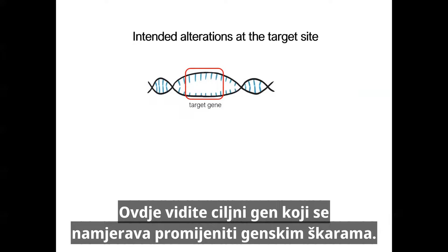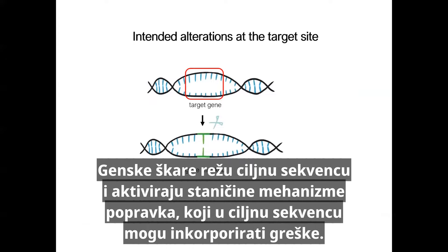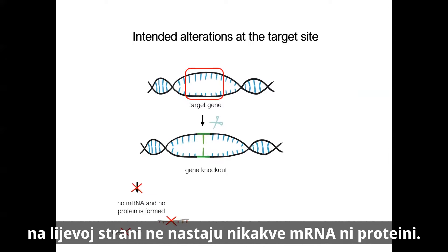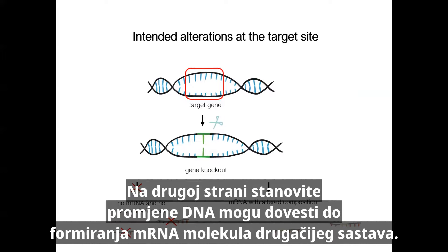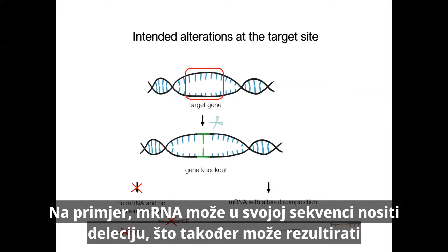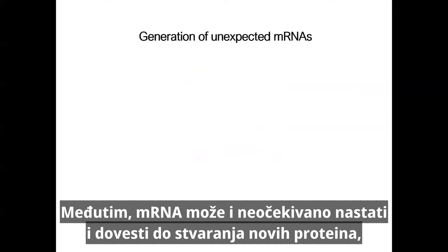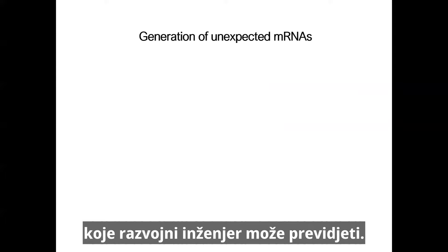The gene scissors cut at the target sequence of a target gene and activate the cell's own repair mechanisms, which can incorporate errors in the target sequence. These changes can have different effects. On one side, no mRNA and no protein is formed. On the other side, certain changes in the DNA sequence can lead to the formation of mRNAs with a different composition. The mRNA can, for example, carry a deletion in its sequence, resulting in the formation of a truncated protein that cannot perform a certain function. However, mRNAs can also arise unexpectedly and lead to the formation of new proteins — changes that can be overlooked by the developer.